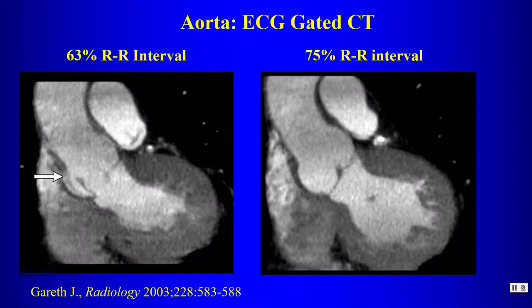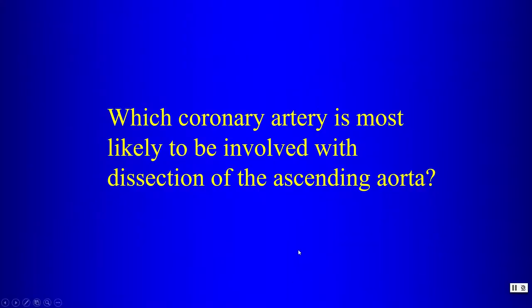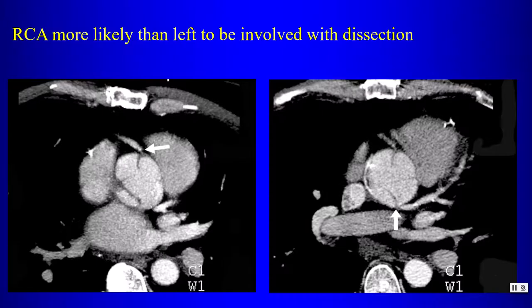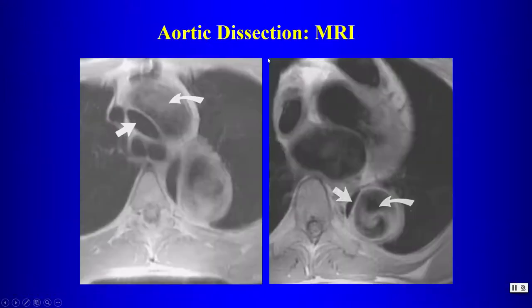For abnormalities of the ascending aorta, especially dissections, the best imaging approach is cardiac-gated CT. The coronary artery most likely to be involved with dissections of the ascending aorta is the right coronary artery — dissection flaps tend toward the right coronary artery more often than the left. Here are examples showing the dissection flap coming very close to the right and left coronary arteries, but actual involvement is more often right-sided.